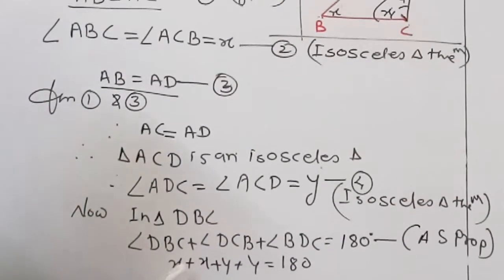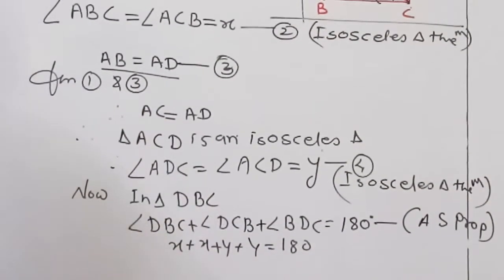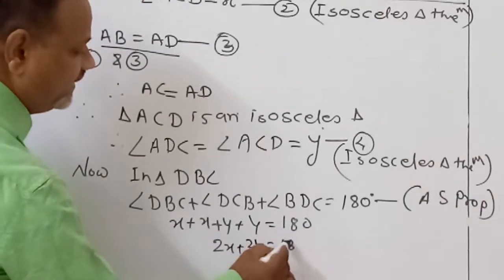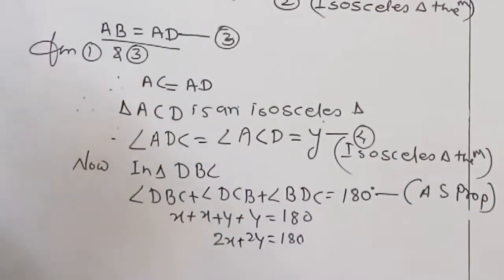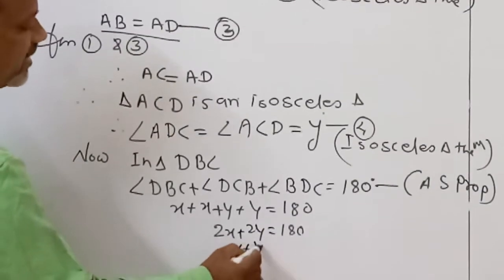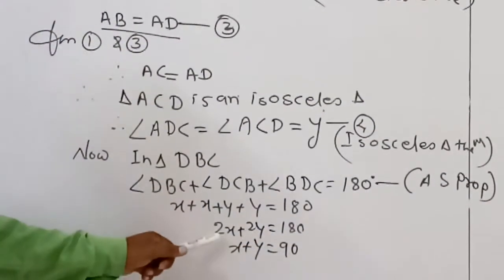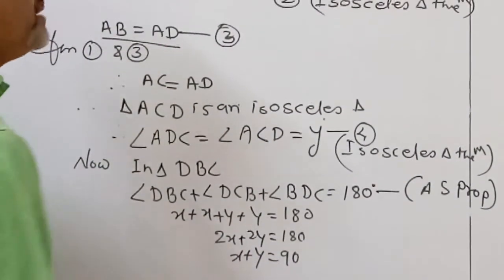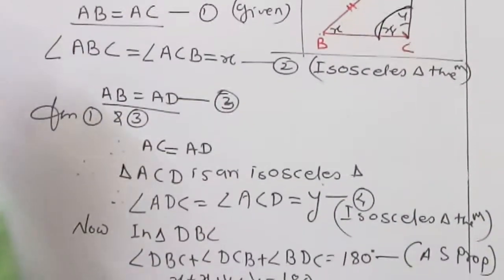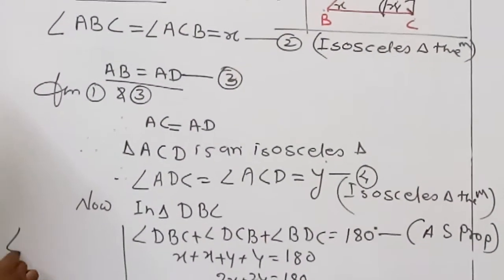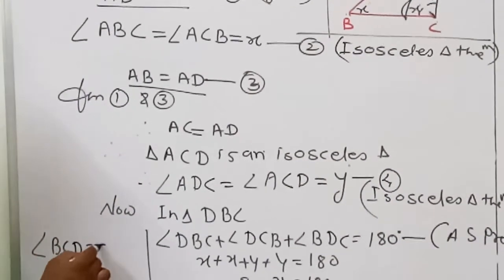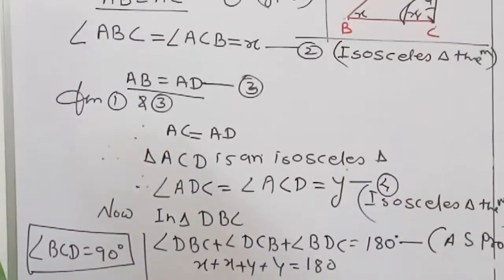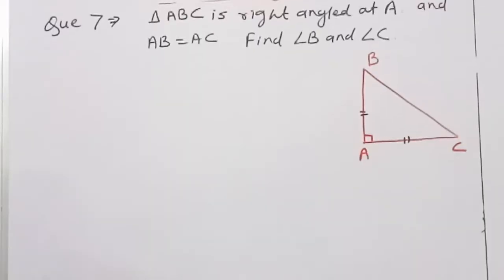Therefore 2x plus 2y equals 180. Dividing both sides by 2, we get x plus y equals 90. And x plus y is angle BCD. Therefore angle BCD equals 90 degrees. In this way we can prove that angle BCD equals 90 degrees.